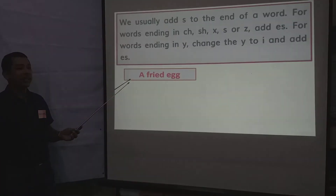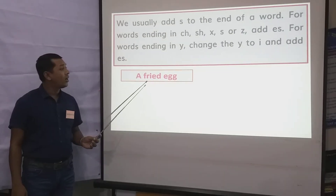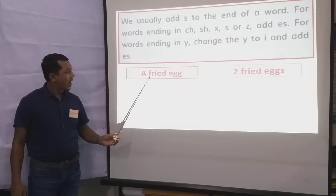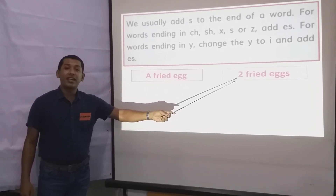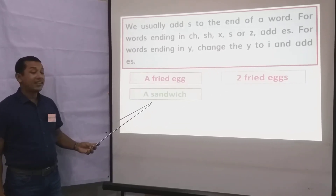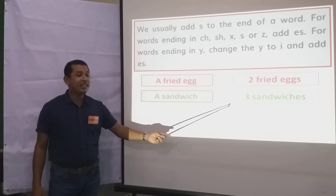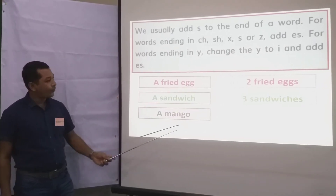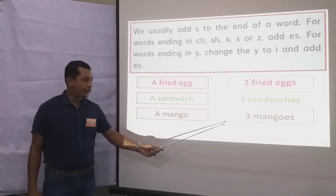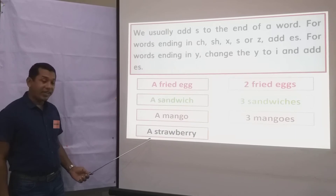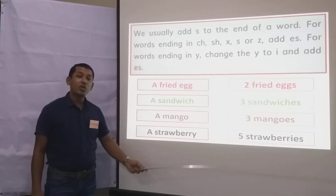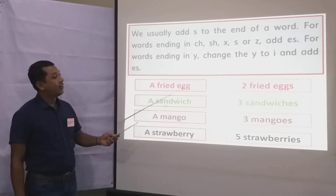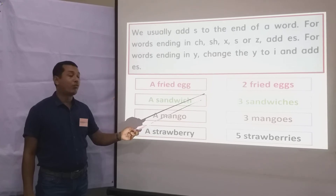Look at the word and the plural form. A fried egg — two fried eggs. A sandwich — three sandwiches. A mango — three mangoes. A strawberry — five strawberries. I repeat again: this is the word and this is the plural form for these words.